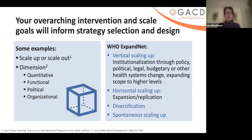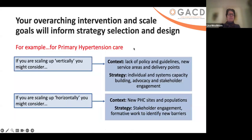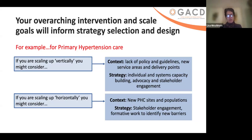Horizontal scaling up is probably more commonly known as expansion or replication. But there can also be diversification, or this interesting concept of spontaneous scaling up, where something is so successful that it starts to scale up even before you've begun to think about that. For primary hypertension care, you might consider scaling up vertically — are there no policy and guidelines, are there new service areas or delivery points? The strategy might be individual and systems capacity building, advocacy, and stakeholder engagement. On the other hand, if you're considering horizontally — for example, work that DKOG and Mark Huffman have led in expanding primary healthcare delivery for hypertension — you might think about new PHC sites and populations, stakeholder engagement, and formative work to identify new barriers as you go to different states or districts.